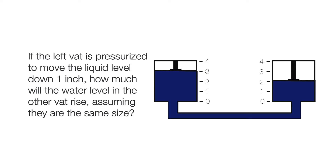Given the rules above and what we know about pressure, let's look at a few examples. Here is one that displays the basic function of a hydraulic system. On one side is a vat of liquid, which is connected by a hose to another vat. If the left vat is pressurized to move the liquid down one inch, how much will the water level in the other vat rise, assuming they are the same size? Because pressure applied to an enclosed liquid is equally distributed, when the liquid in the left vat is pressed down one inch, the water level in the right vat will rise exactly one inch.